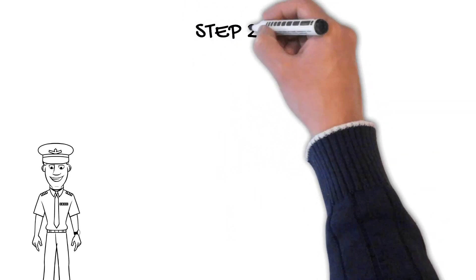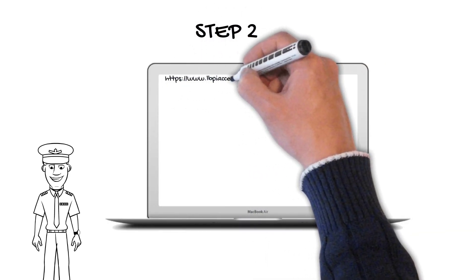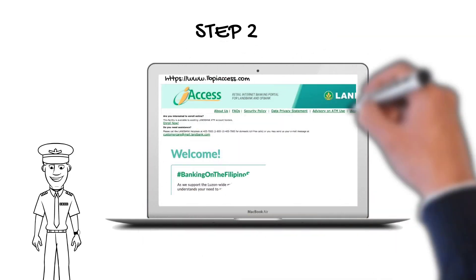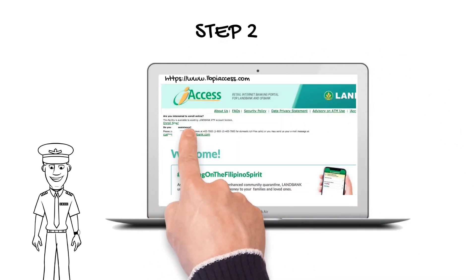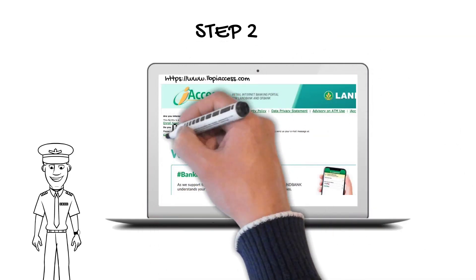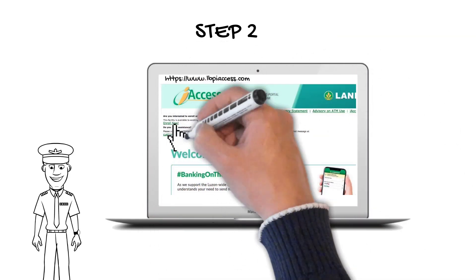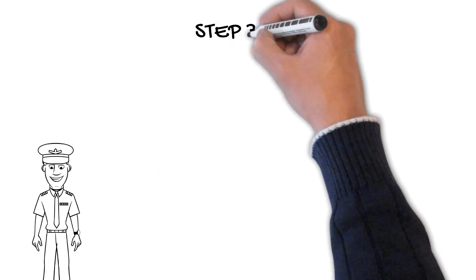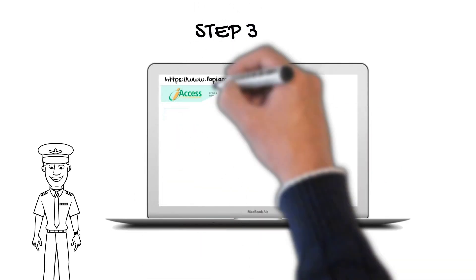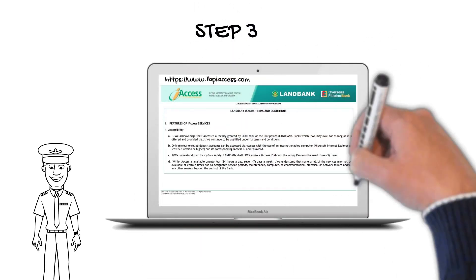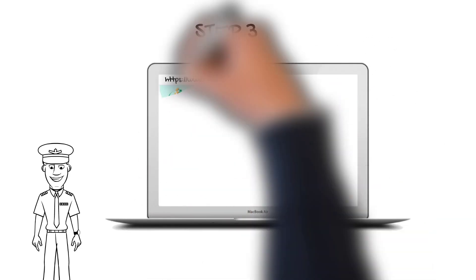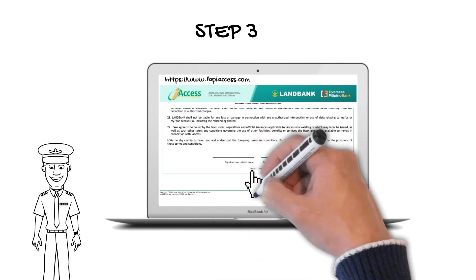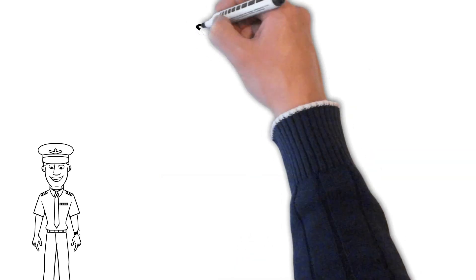Step 2: On the landing page, click the Enroll Now link at the upper left corner of the screen, assuming you are using a computer. Step 3: Read the terms and conditions, scroll down to the bottom using the scroll bar, then click the I Agree button.